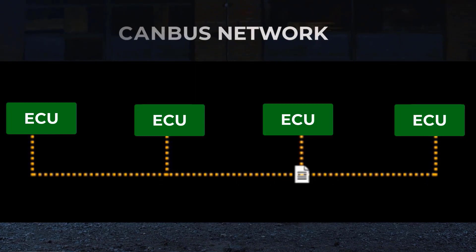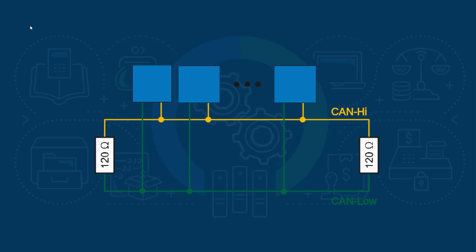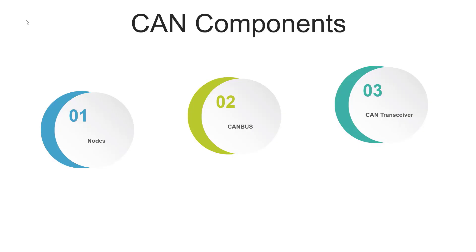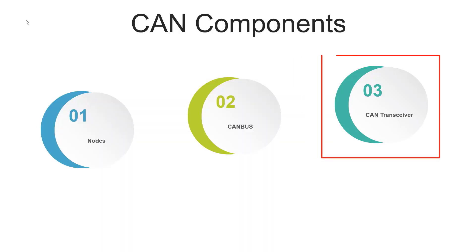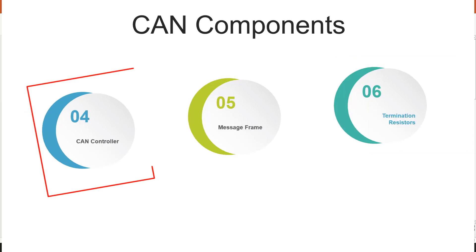The CAN bus is a physical communication channel that connects nodes within the network. It comprises two communication lines: CAN high and CAN low, which carry the electrical signals representing the data being transmitted. The CAN transceiver serves as the interface between the CAN bus and the node's internal electronics. It converts digital signals from the node into electrical signals for transmission on the CAN bus and vice versa, also providing signal conditioning and protection against electrical noise.